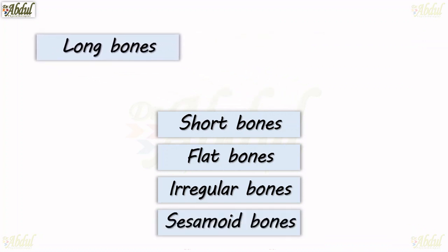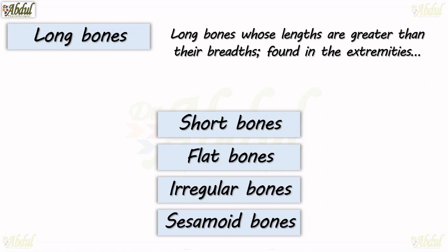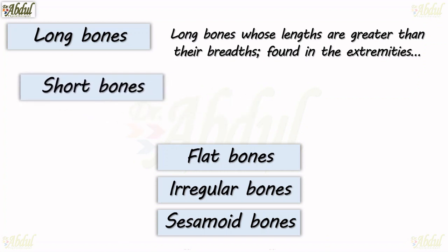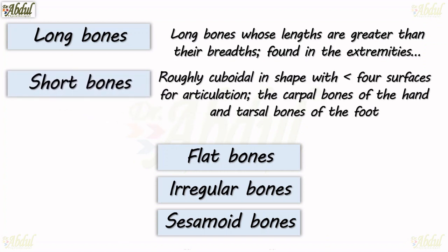Long bones. Long bones' length are greater than their breadth and are found in our extremities — that is, in our limbs. Short bones. Round cuboidal in shape with four surfaces for articulation. The carpal bones of the hand and the tarsal bones of the foot are examples of short bones.